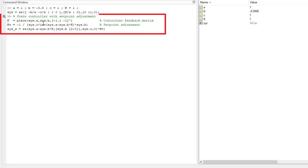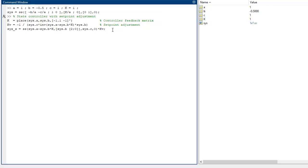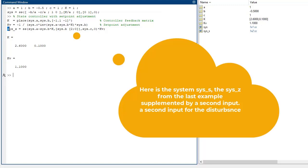First, we calculate the state controller with setpoint adjustment, as in the last example, or in the last lectures. Here is the system sys s, the system underscore z from the last example, implemented by a second input for the disturbance.